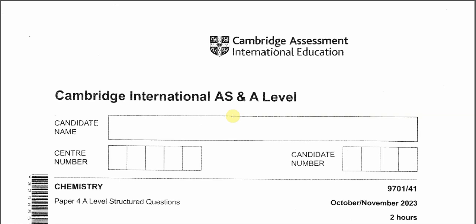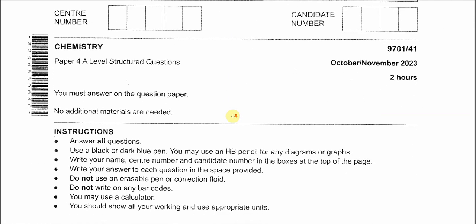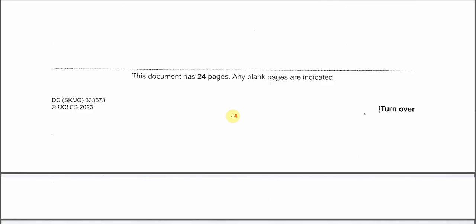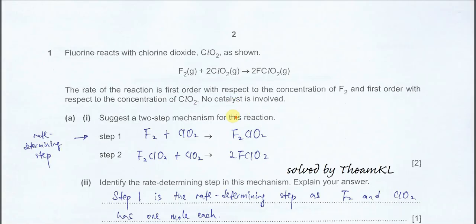October, November 2023, Paper 4, Variant 1, Question 1. This is the reaction between fluorine and chlorine dioxide. One mole of fluorine reacts with two moles of chlorine dioxide to form two moles of the product.